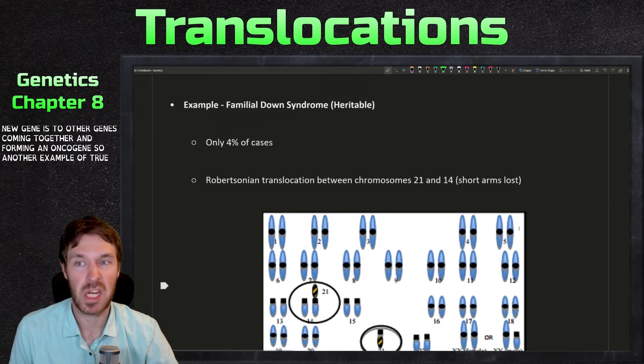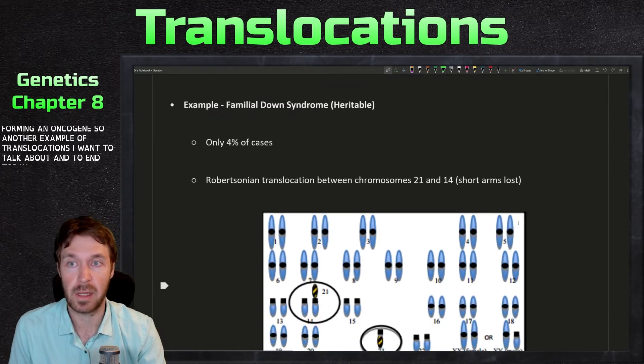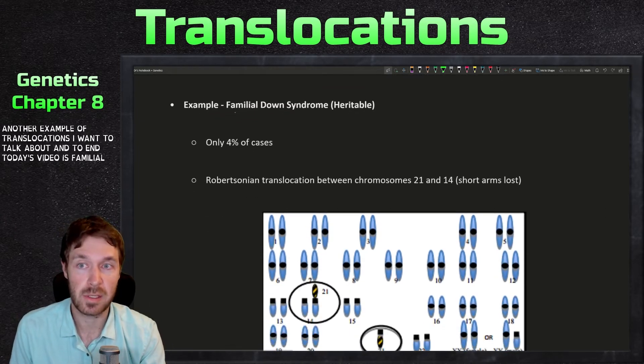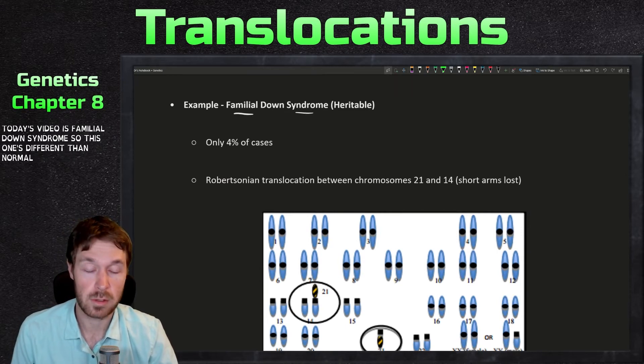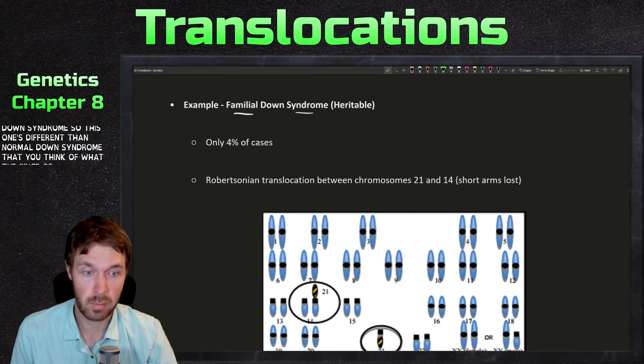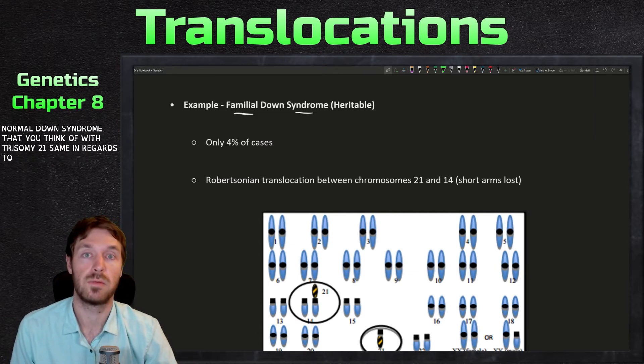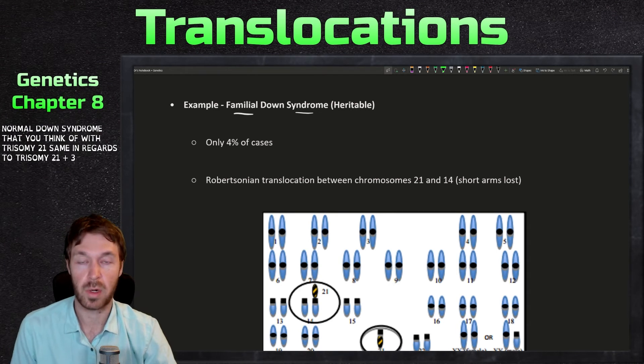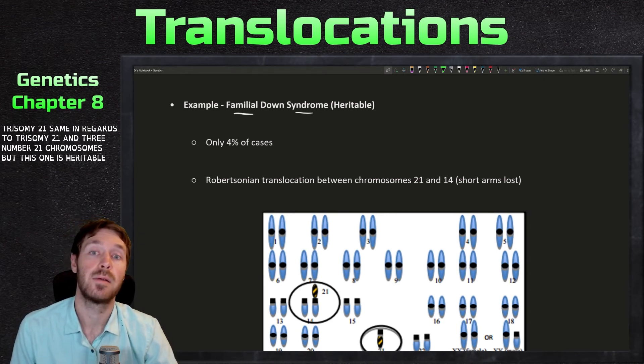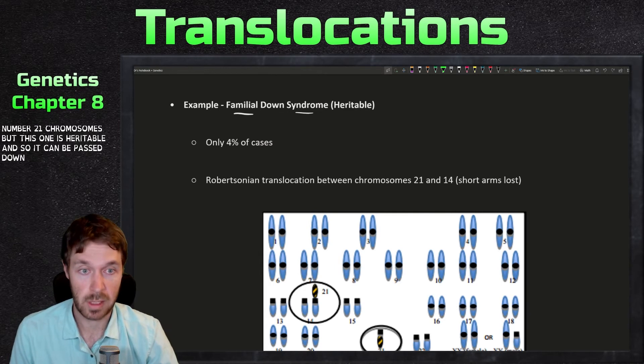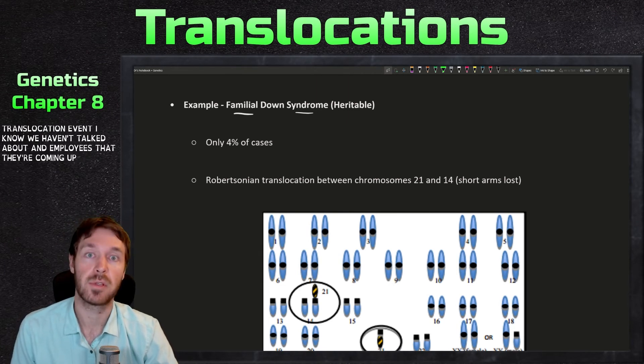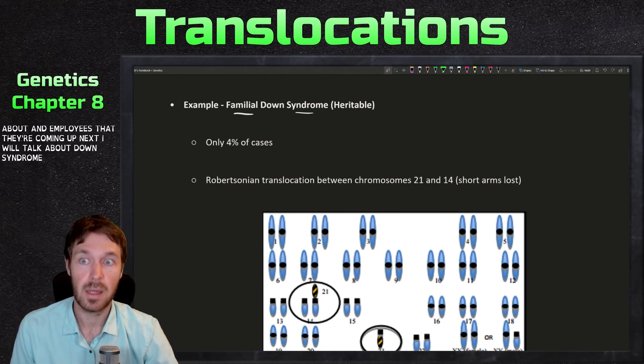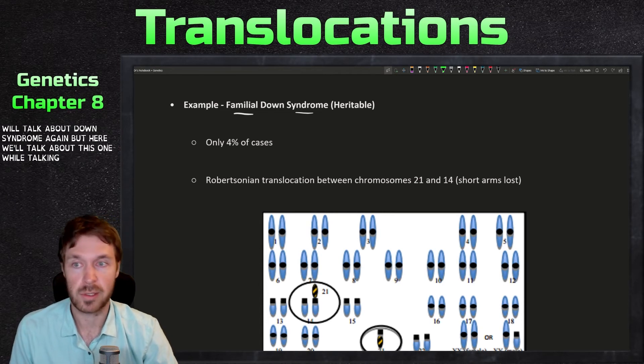So another example of translocations I want to talk about and to end today's video is familial down syndrome. So this one's different than normal down syndrome that you think of with trisomy 21. Same in regards to trisomy 21 and three number 21 chromosomes. But this one is heritable and so it can be passed down through generations. And this one's caused by a translocation event. I know we haven't talked about aneuploidies yet. They're coming up next. So we'll talk about down syndrome again. But here we'll talk about this one while talking about translocation.